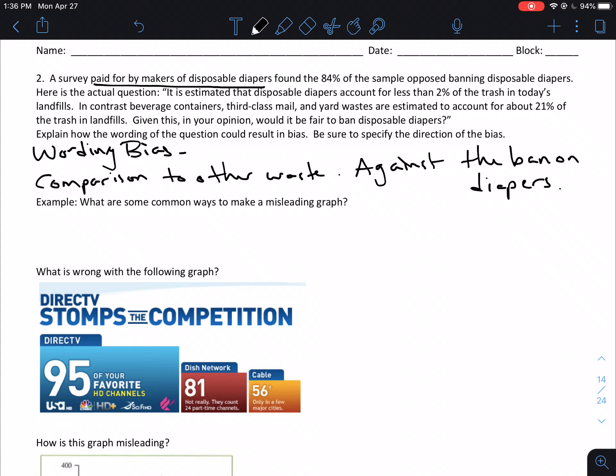Alright, so in addition to talking about the bias as well as kind of all of the other things that are involved in a survey and the questions and the wording of it, we're also going to talk about some ways that graphs can be made to be misleading.